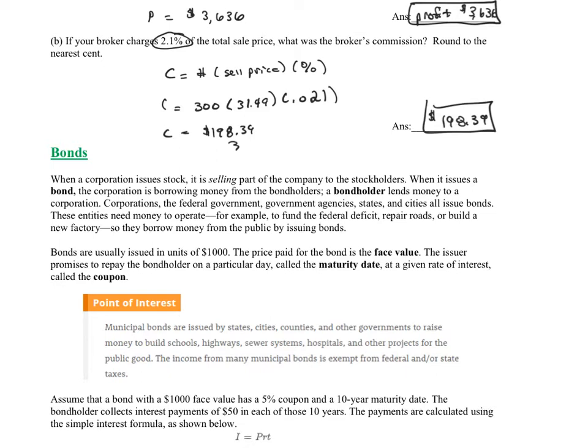When it issues a bond, the corporation is borrowing money from the bondholders. A bondholder lends money to corporations, the federal government, government agencies, states, and cities—all of these entities issue bonds.